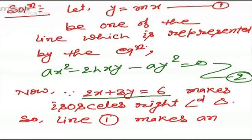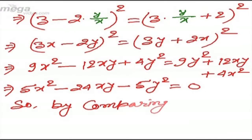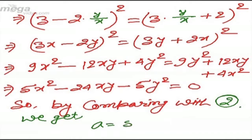Comparing this equation with the given equation ax² - 2hxy - ay² = 0, they are the same form. So a = 5, and since 2h = 24, we get h = 12.